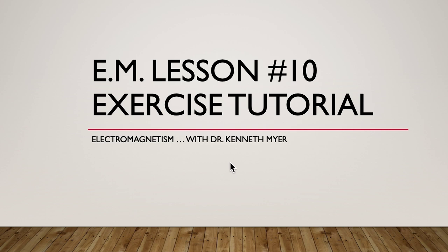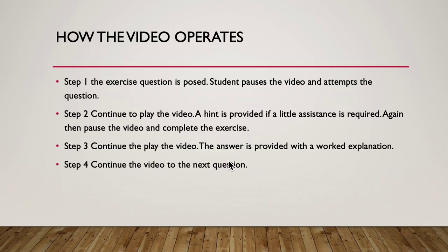Hello, it's Dr. Ken here with you, and this is Electromagnetism Lesson 10, our exercise tutorials. How these tutorial videos work is very simple. Step one: the exercise question is asked, then you pause the video and have a go at the question. Step two: continue to play the video — I'll give you a hint and a little bit of assistance if you need it, to point you in the right direction. Then continue to play the video. I'll provide the answer with a word explanation of how we got to the answer. And then step four: continue the video to the next question, and so on.